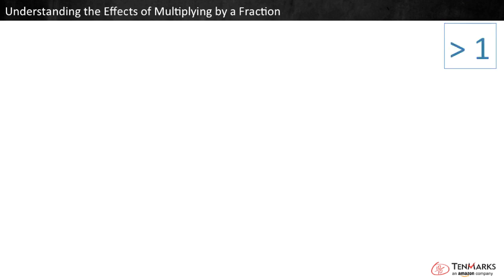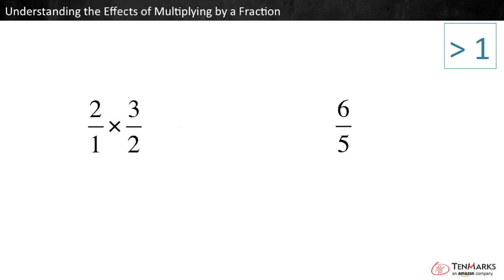Finally, what happens when we multiply by a fraction greater than 1? Fractions greater than 1 have a numerator larger than their denominator — for example, 3 halves and 6 fifths. We can see that when we multiply 2 times 3 halves, we get 6 halves, or 3. This is greater than 2.